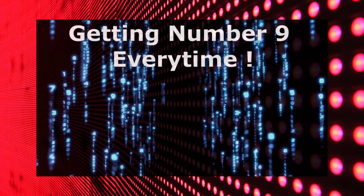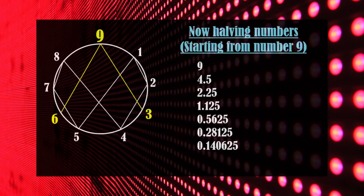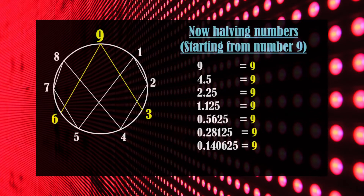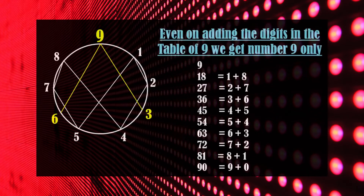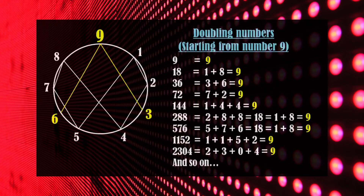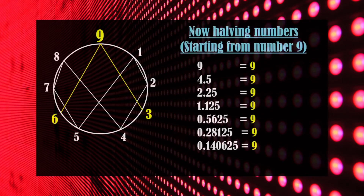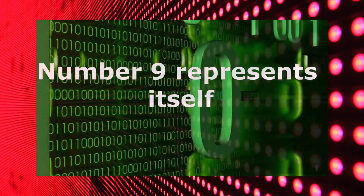When doubling from number 9, we are getting only a single number — number 9. What will happen if we halve the numbers repeatedly starting from number 9? We are getting number 9 every time. No other number is present in the sequence. Even on adding the digits in the table of 9, we get number 9 only. So whether we double or halve the numbers starting from number 9, we always get the number 9 only. It implies that number 9 represents itself.